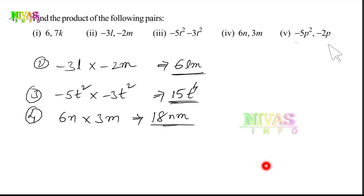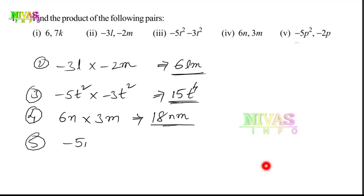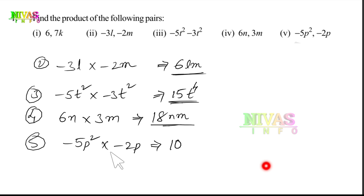Fifth one: minus 5P squared into minus 2P. Minus into minus gives plus. 5 into 2 is 10. Then P squared into P gives P cubed. So the answer is 10P³.